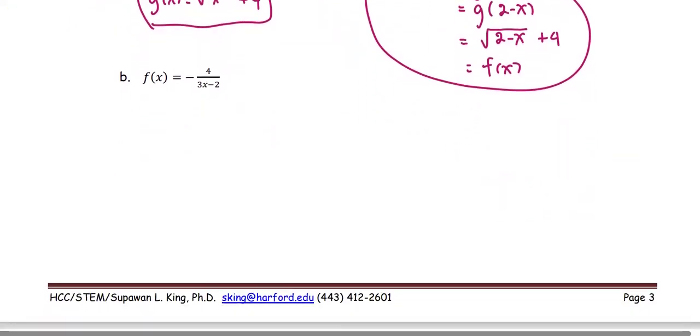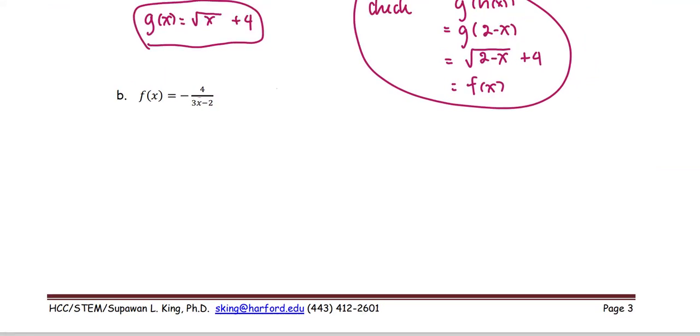Let's take a look at another example. In this example, f(x) equals negative 4 over 3x minus 2. We're going to treat the 3x minus 2 as the innermost function, or the simpler function that we see as the innermost one.